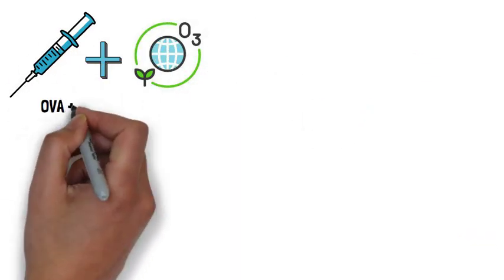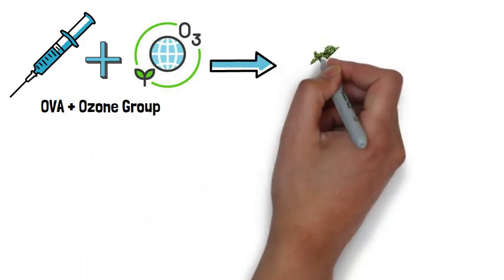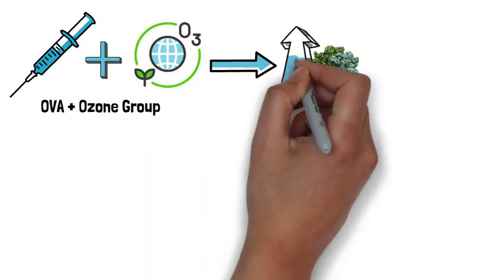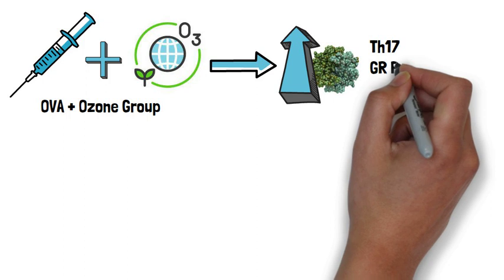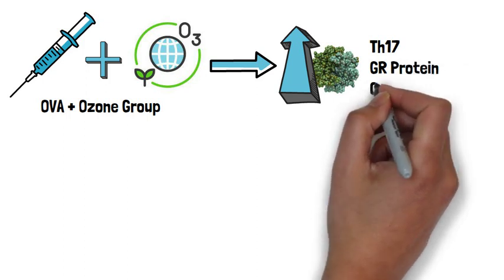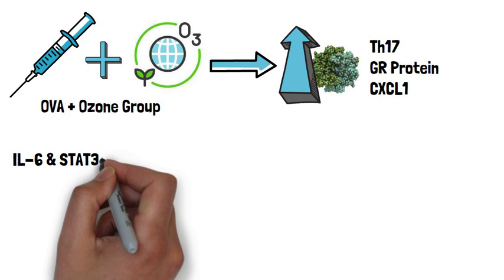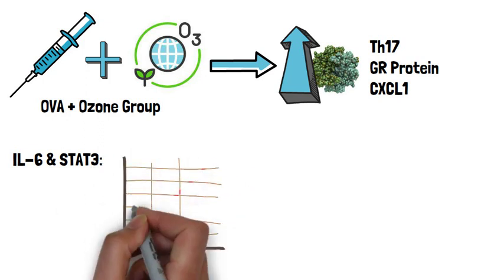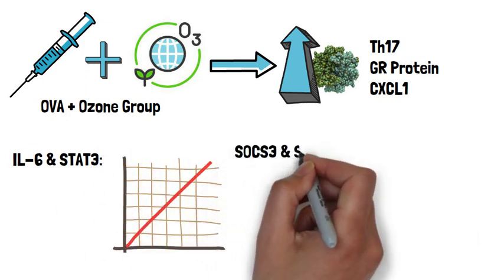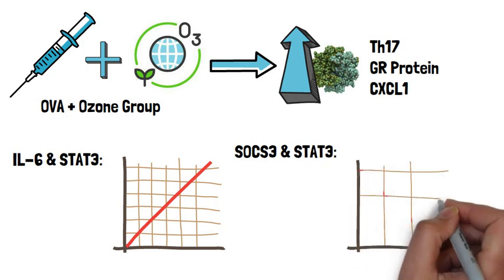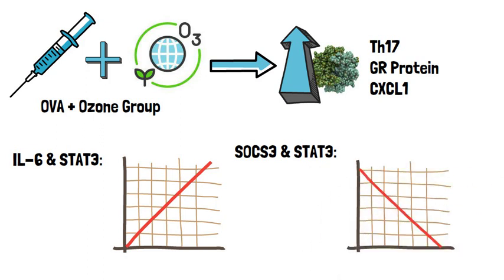The study's findings show that the OVA and ozone group had higher expression levels of cytokines associated with TH17, GR protein, and CXCL1. Interleukin 6 and STAT3 were shown to be positively correlated, while SOCS3 and STAT3 were found to be negatively correlated.